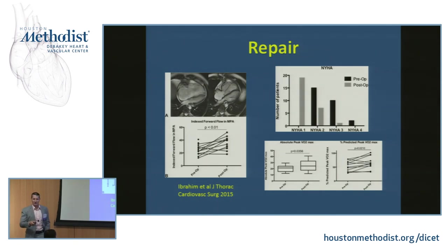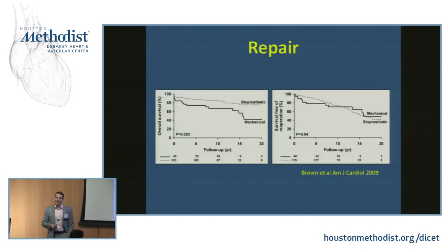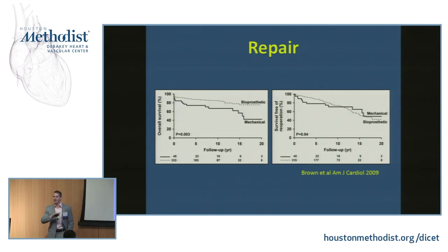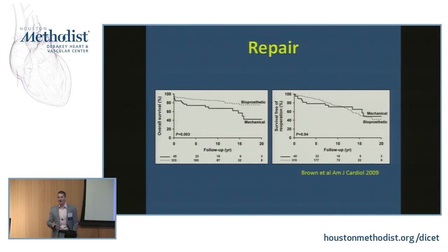Not everybody is a candidate for repair — only certain people will have a posterior leaflet that's not stuck down and could be used in a cone repair. For those who need a replacement, bioprosthetic valves are better than mechanical valves. This has been studied at the Mayo Clinic — they looked at mechanical versus bioprosthetic valves. The longevity is relatively equivalent between the two, however mortality was higher in people with a mechanical valve: more problems with valve thrombosis, infections, and complications. So putting in a bioprosthetic valve — with all its downsides including deterioration over time — is actually the way to go in patients with Ebstein's anomaly.